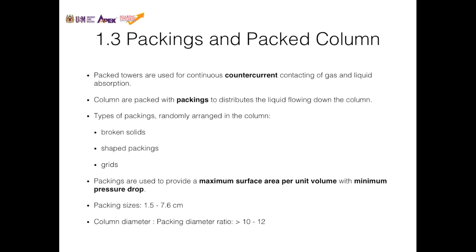Packing sizes range from diameters of 1.5 to 7.6 centimeters. The rule of thumb for column size relative to packing size follows a ratio of 10 to 12 — meaning the column diameter should be 10 to 12 times larger than the individual packing size.